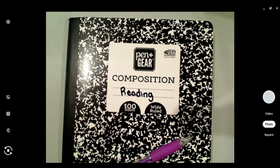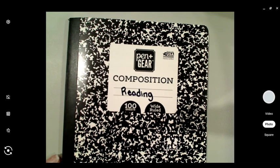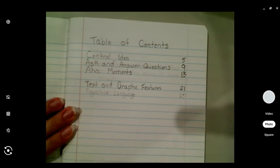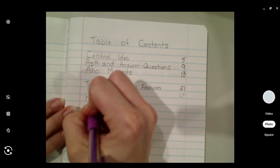For this journal entry you will need your reading journal and a pencil. I'm going to start by opening up to my table of contents and I'm going to add monitor and clarify.